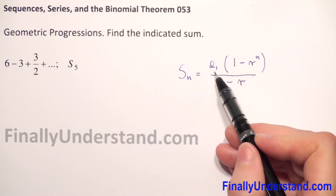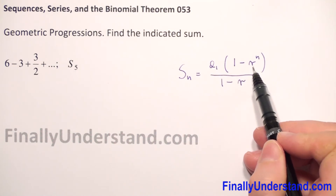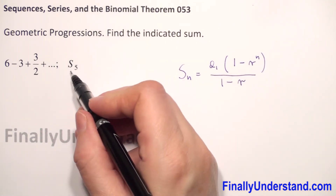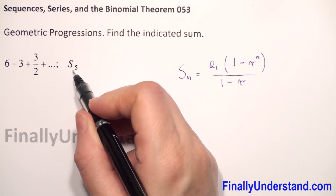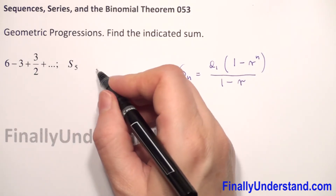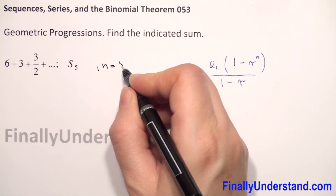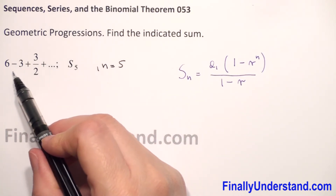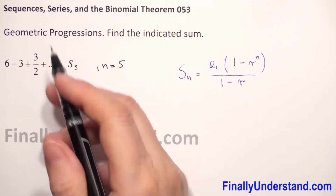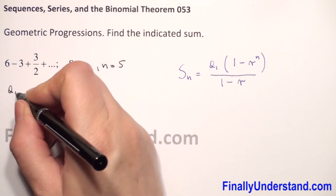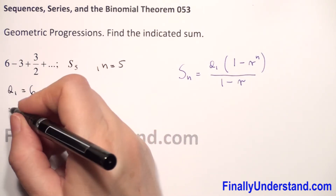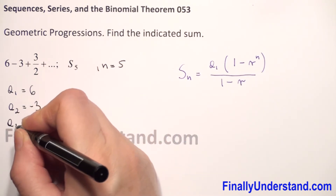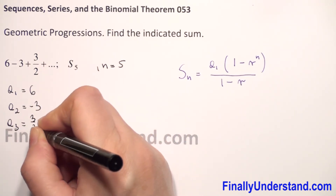We need the first term, the common ratio, and n. In our example we have to find the sum of five terms, so n equals 5. We have the series: 6, minus 3, plus 3 over 2. So the first term A1 is 6, the second term is negative 3, and the third term is 3 over 2.